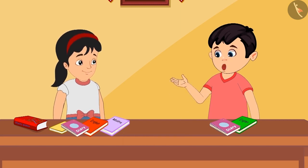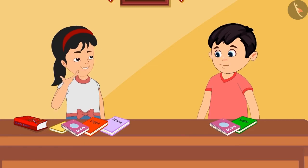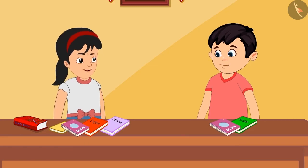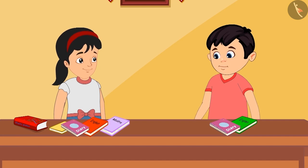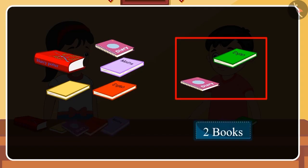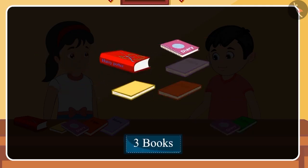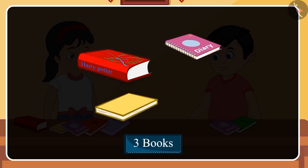Pinky, you have added five and two. Instead, you had to tell me how much more five is than two. Chotu, I didn't understand. That's okay Pinky, let me explain. You have five books and I have two, so if we subtract two from five, there will be three left. This means you have three more books than me. Did you understand?